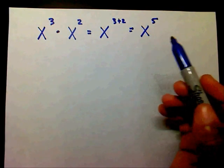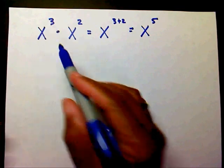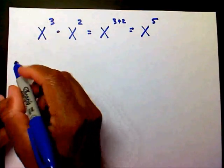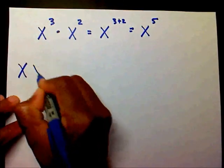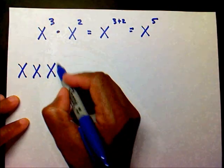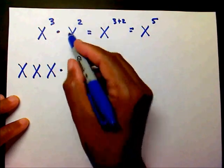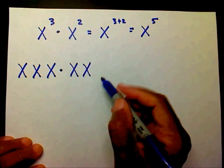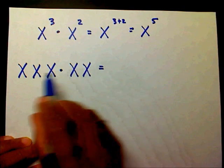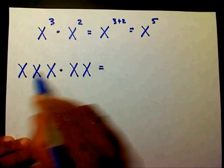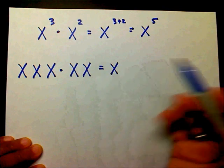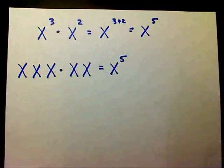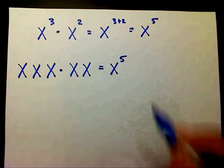What exactly does x to the third mean, and what does x to the second mean? Well, let's expand that. x to the third is really x written three times multiplied together, and x to the second really means x written two times. And that leaves me with x to the — counting: 1, 2, 3, 4, 5 — x to the fifth. And that's how we end up with the same answer.